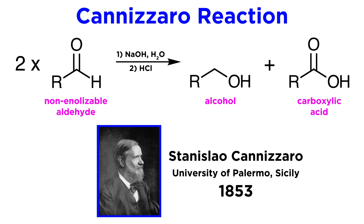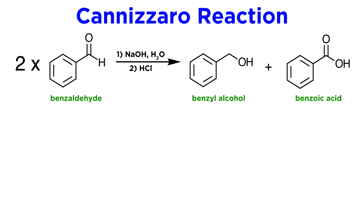The reaction was discovered by Italian chemist Stanislao Cannizzaro at the University of Palermo in Sicily, who published his results in 1853. In its original formulation, two molecules of benzaldehyde react in an aqueous sodium hydroxide solution to yield one molecule of benzoic acid and one of benzyl alcohol.